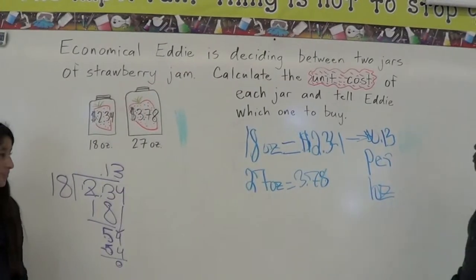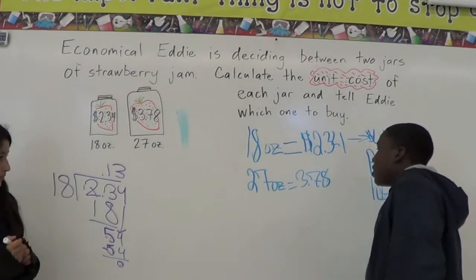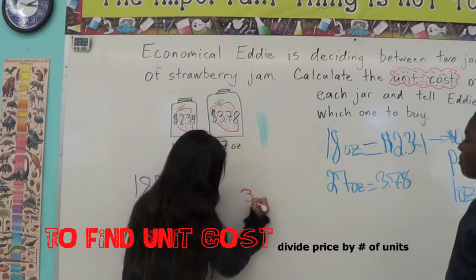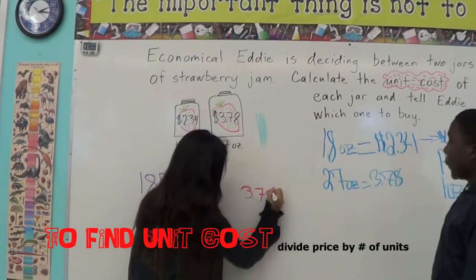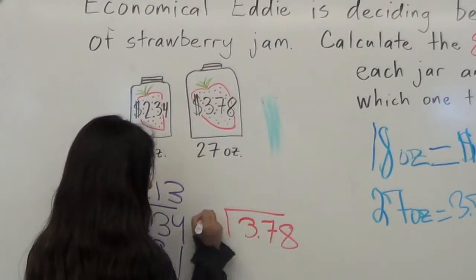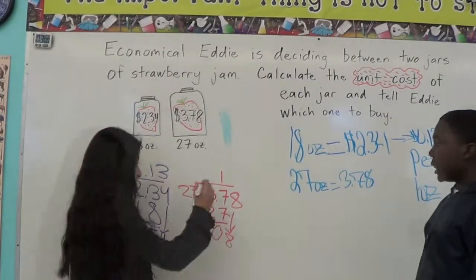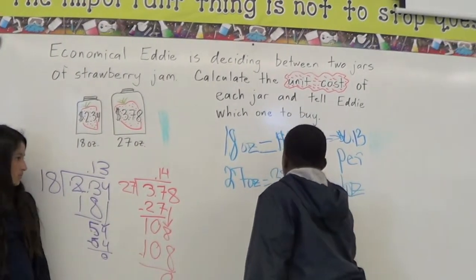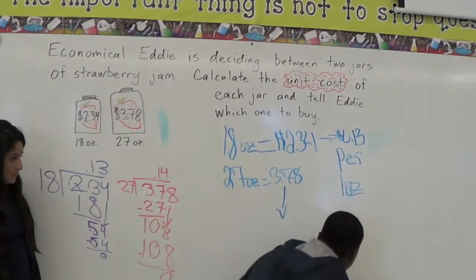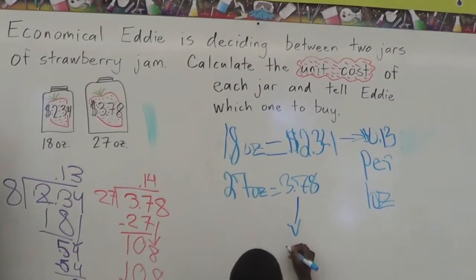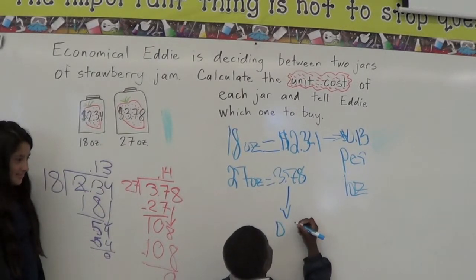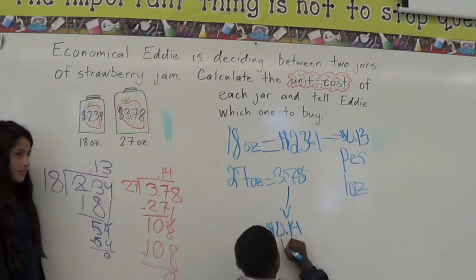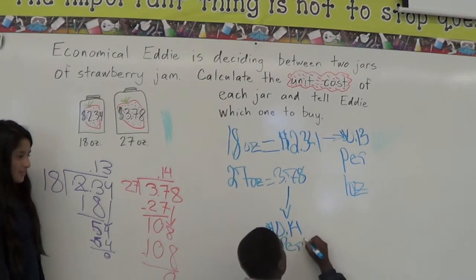And the next problem is $3.78 divided by 27. For the 27-ounce jar, we get $0.14 per ounce.